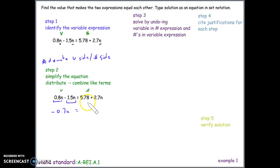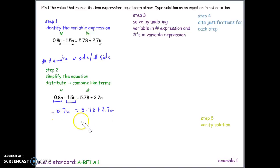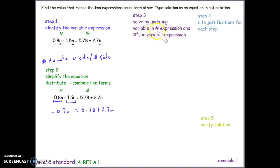On the right side, there are no like terms — we have a number and a variable, which cannot be combined. There was nothing to distribute in this problem either. Now we have a fully simplified equation, and we move to step three: solve by undoing the variable and number expressions.